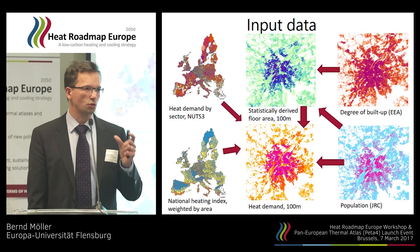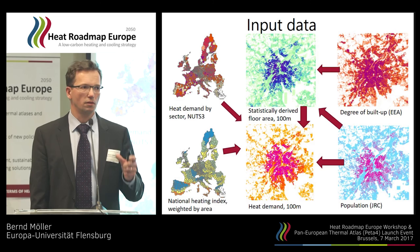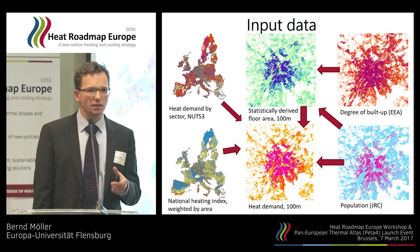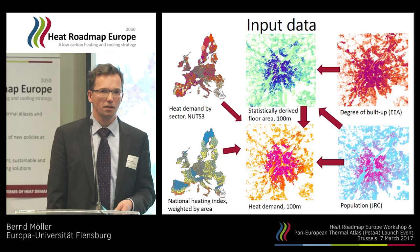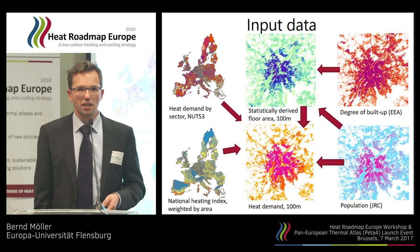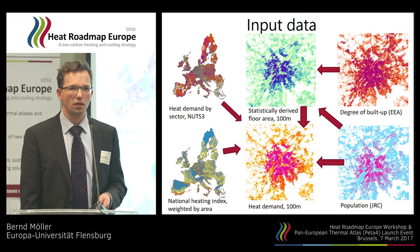Then we calculate the floor area. For each hectare, we calculate how many square meters of floor area we have for multi-story buildings, for single-family houses, for the service sector. That is actually an innovation in this tool — we had it in PETA 3, but only for the service sector. And then the resulting map is a heat demand: the current heat demand, the future heat demand, based on 100-meter resolution.